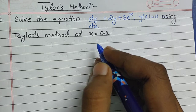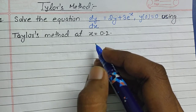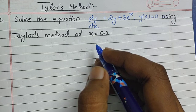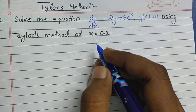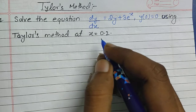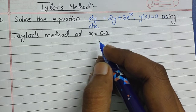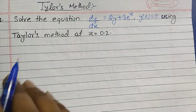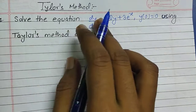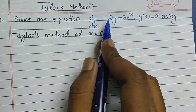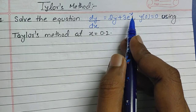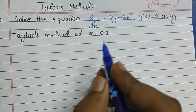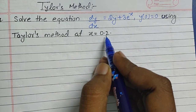We will be given the first order derivative. x naught and y naught will be given, along with the value of x for which we need to solve the equation. Without wasting time, let's begin and see how the equation dy/dx = 2y + 3e^x is solved for x = 0.2.